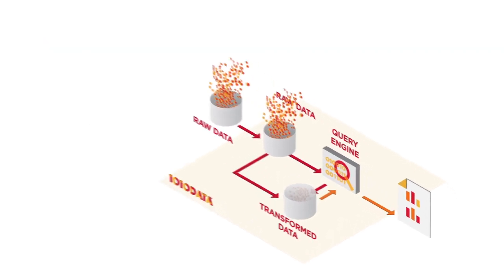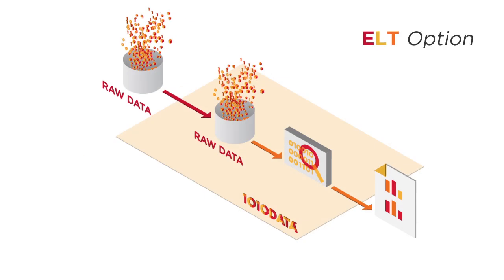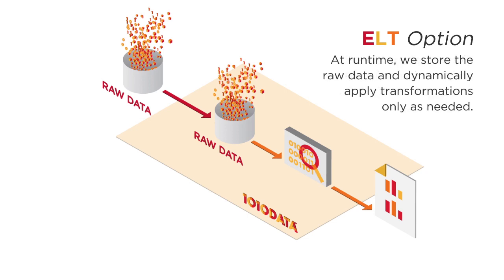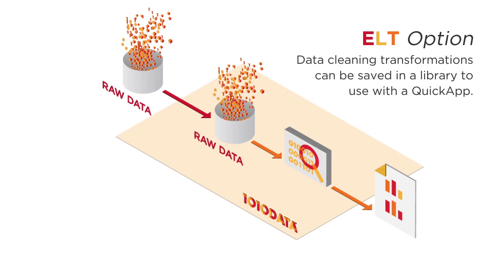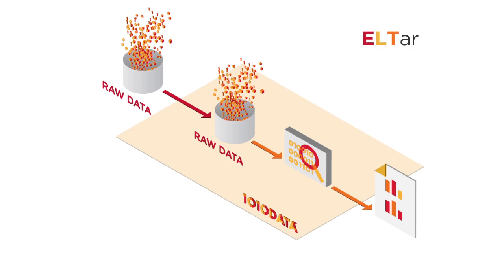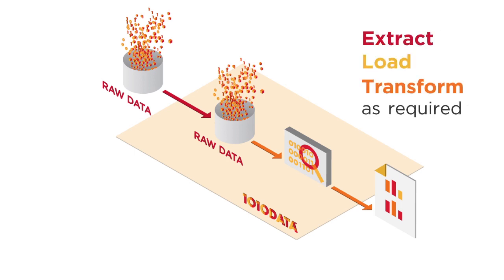With ELT, we also have another option. Since transformations happen within the platform, we can either pre-compute or apply them when the query is run. When applying queries at runtime, we store the raw data and dynamically apply transformations only as needed. Data cleaning transformations can be saved in a library to use with the Quick App. Analysts can then use the TRS through the Quick App for an on-demand view of the data. This is called ELTAR — short for Extract, Load, Transform, As Required.